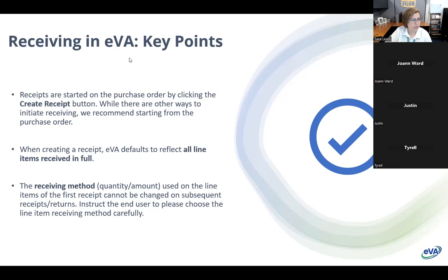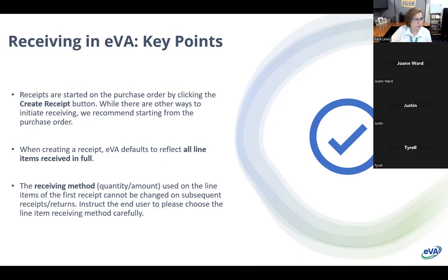When creating a receipt in the new platform, this is different from the previous platform: EVA defaults to reflect that all line items have been received in full. Some folks are having to get used to this because they're used to the accept-all button in the previous platform. If they want to receive in full, it's already set up for them. But we will talk about how people can partially receive, especially with big orders, and some troubleshooting steps with regard to partial receiving.